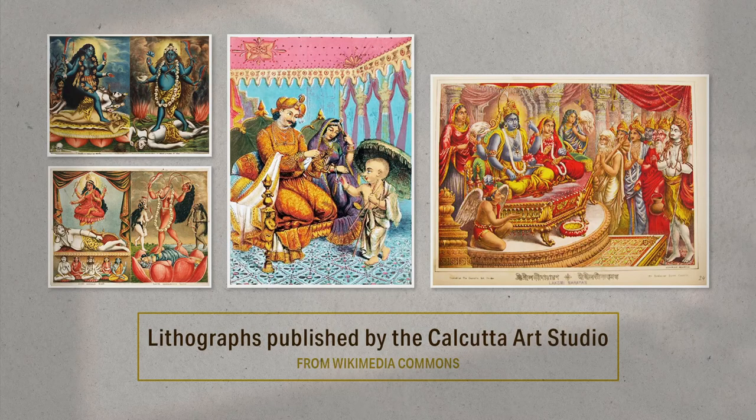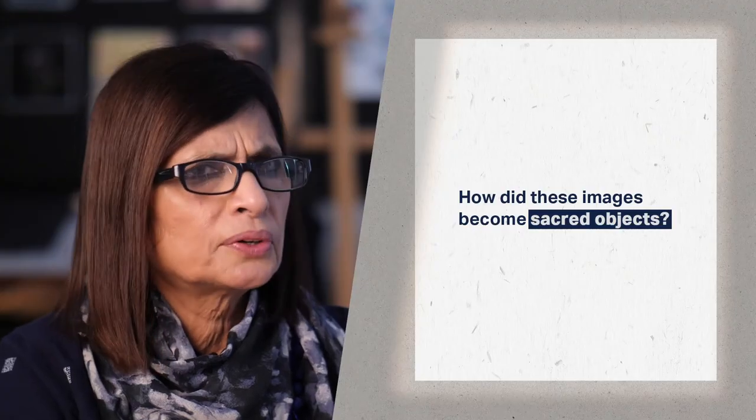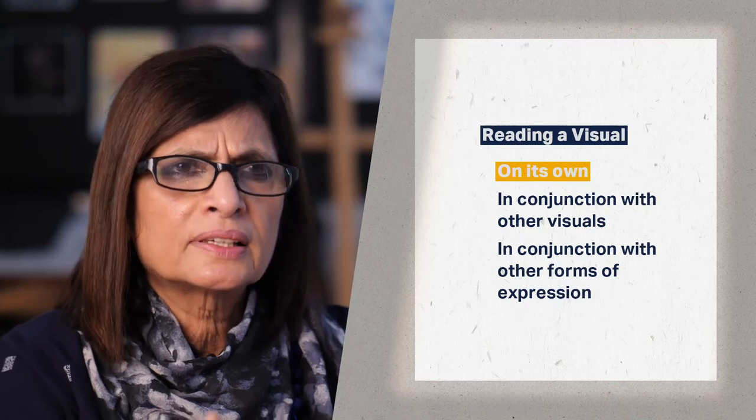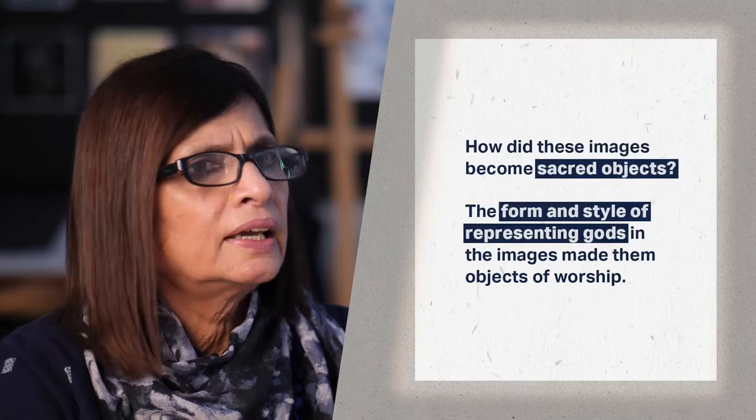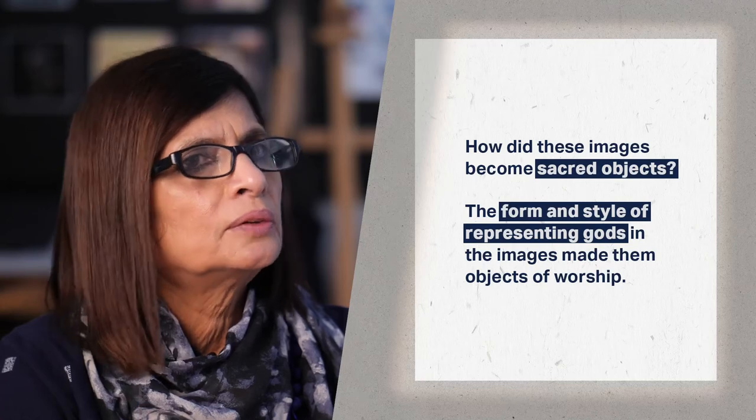He interprets the images at two levels: first, by reading what the images themselves say, and second, by reading different forms of visual expressions such as theatre, painting and prints. One of the contexts in Pinney's research is Calcutta of the late 1800s and early 1900s. This is where the first lithography press, the Calcutta Art Studio, was established. The studio began with creating images of gods which became hugely popular. The patrons of the studio bought these images not as art but as pictures of gods which they could worship in their homes. Pinney became curious about how these mass-produced images became sacred objects. He looked carefully at what the images depicted and what ideas defined the subject, composition and aesthetic of the image.